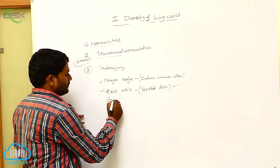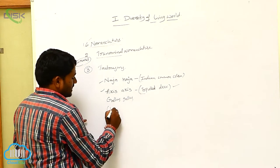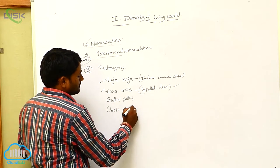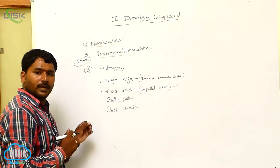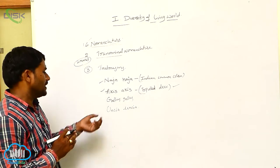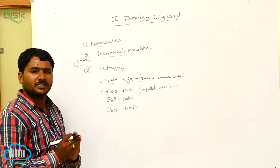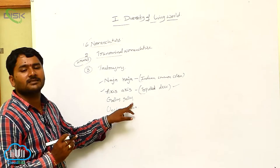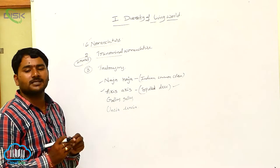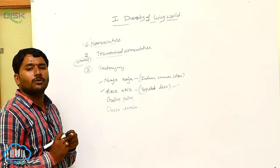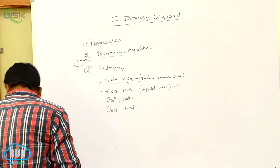There are many more examples of tautonymy. Gallus gallus is the scientific name of the hen. Uncia uncia is the scientific name of the snow leopard. In all these cases, both the genus and species names are identical.